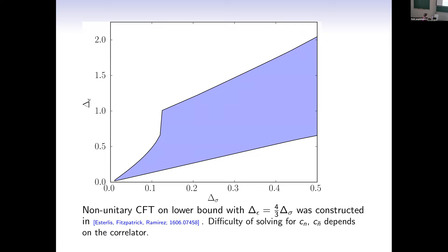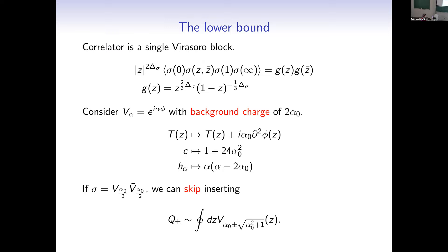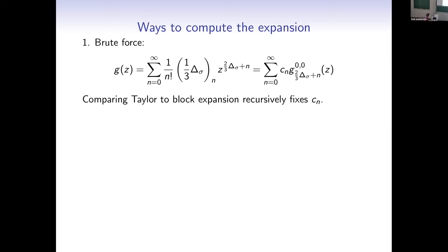This is a highly non-unitary solution because the identity operator is not exchanged — only this Virasoro primary with dimension 4/3 of sigma is exchanged. But we should ask: is this one of the non-unitary theories where the non-unitarity is hidden from us? Does it still have a positive conformal block expansion when we restrict to just this correlation? There are three ways of showing the answer is yes. The first is brute force: write down a Taylor expansion using the binomial theorem, solve for Taylor coefficients in closed form, and recursively fix the coefficients c_n by demanding correct powers appear on both sides of the SL(2) conformal block expansion.